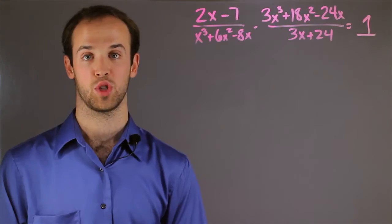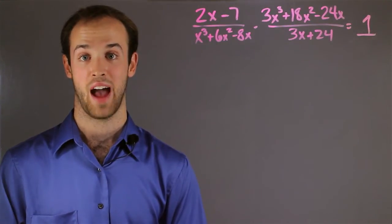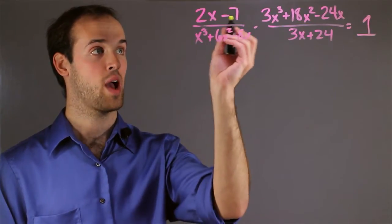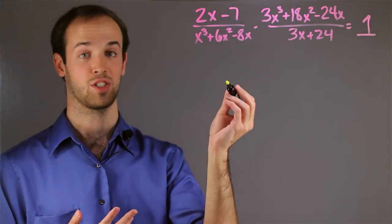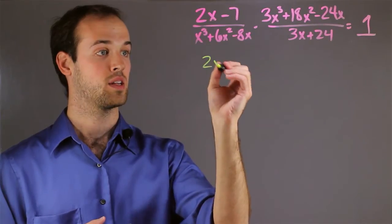The first thing I want to do is treat each numerator and denominator as a problem all its own, and I want to factor those problems. So I have 2x minus 7, unfortunately I can't factor anything out of that, so we'll leave that alone.